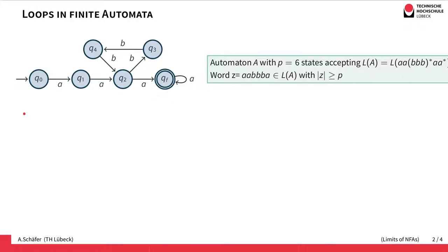Assume we have an automaton like this with six states. At first it takes two A's, then a number of B's that must be a multiple of three, and then at least one A to go to the final state.